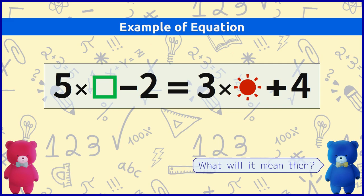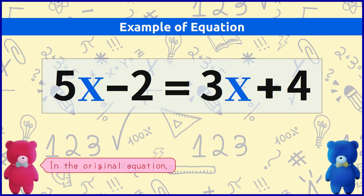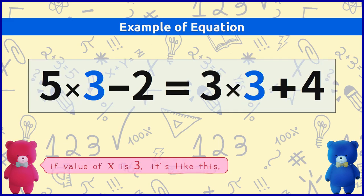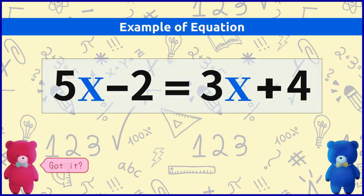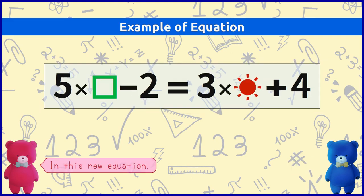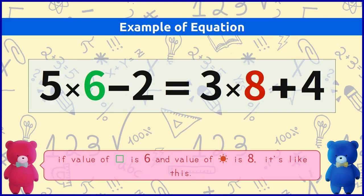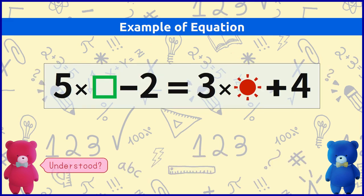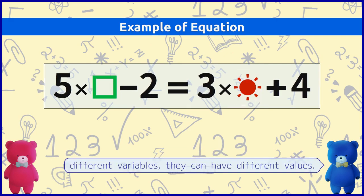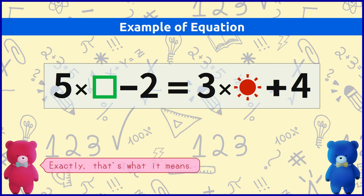What will it mean then? Well, in the original equation, if value of x is 3 it's like this. If value of x is minus 1 it's like this. Got it? In this new equation, if value of square is 6 and value of sunshine is 8 it's like this. If value of square is minus 1 and value of sunshine is 3 it's like this. Understood? I see. Because square and sunshine are different variables, they can have different values. Exactly. That's what it means.